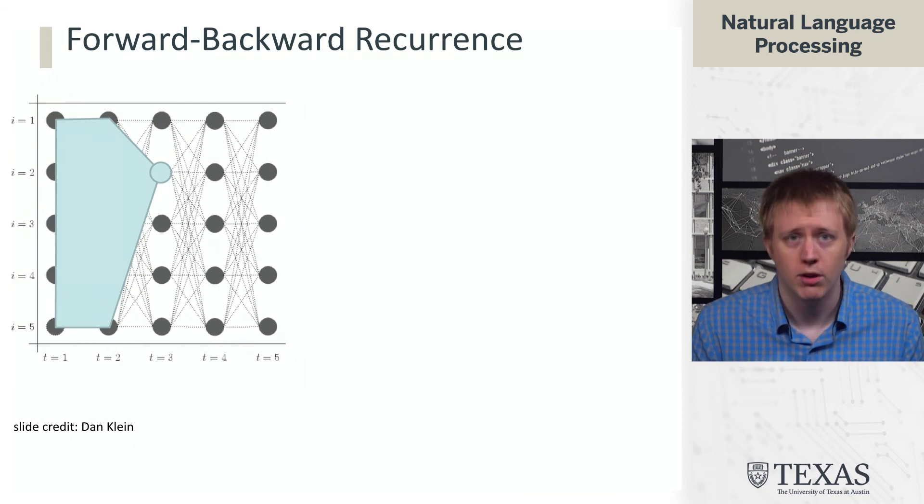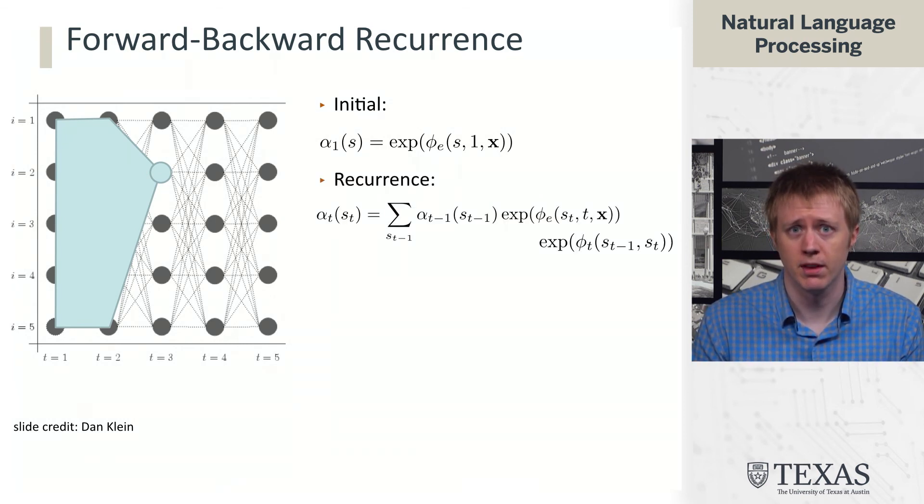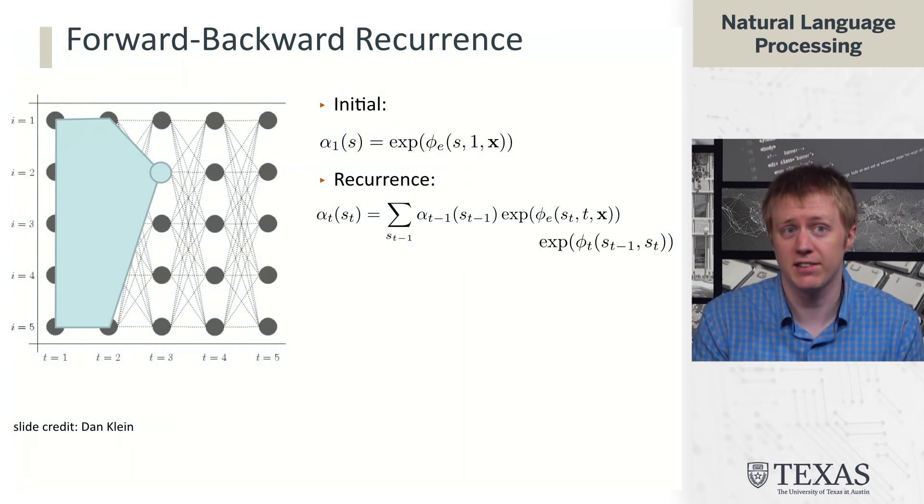So what's happening in forward? This is going to look very similar to Viterbi. We start off, we're going to call alpha our forward scores, and our first alpha is just the exponential of the emissions at the first time step. And then our recurrence here is going to sum, so we're not maxing anymore, we're summing, but we're summing over something that looks very similar to what we had in Viterbi.